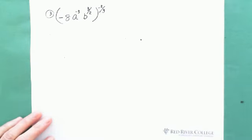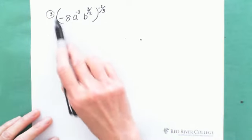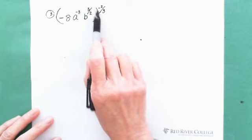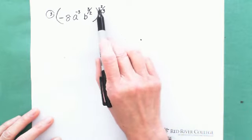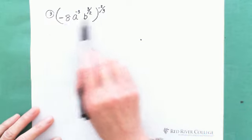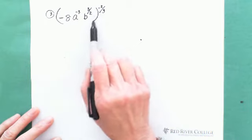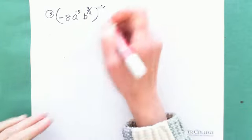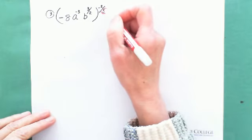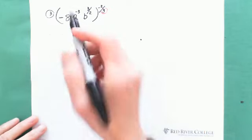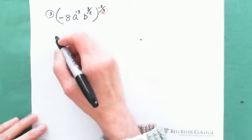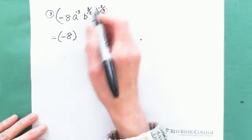Next question. Inside the bracket we have three factors: negative 8, a to the negative 3, and b to the 2/3 exponent, and the whole bracket is raised to the power negative 2/3. As I said, this negative is inside the bracket so it is included. We give each factor the negative 2/3 exponent: negative 8 to the negative 2/3, times a to the negative 3 to the negative 2/3, times b to the 3/2 to the negative 2/3.